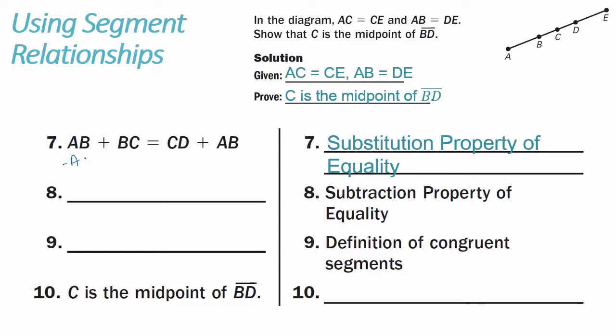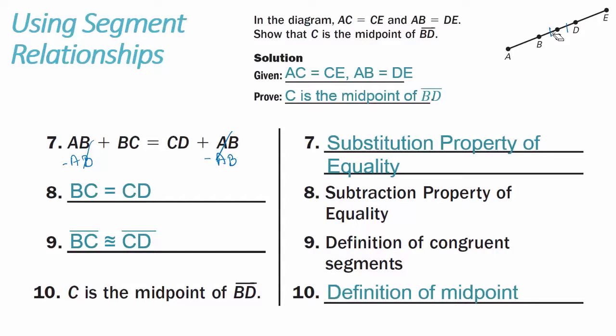If we subtract AB from both sides, the ABs cancel out and we're left with BC equals CD. Once we know BC equals CD, those two lengths are congruent, so line segment BC is congruent to line segment CD. Since the midpoint cuts a line in half making two congruent segments, we can say that C is the midpoint of line segment BD — by the definition of midpoint.